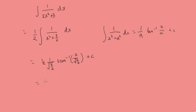Now we can tidy this up. A half times 2 over square root of 3 will just be 1 over square root of 3. So this becomes 1 over square root of 3 inverse tan of x over square root of 3 over 2 plus c. And that's the tidiest way to leave that.